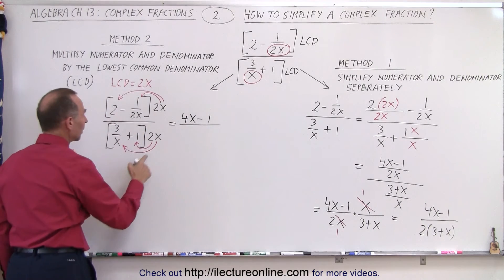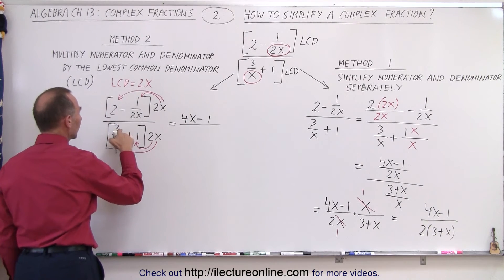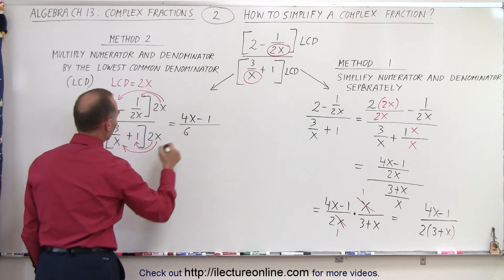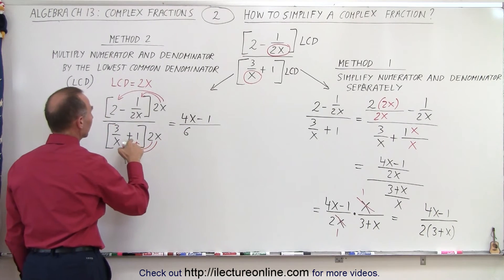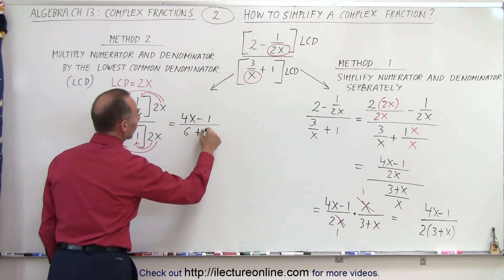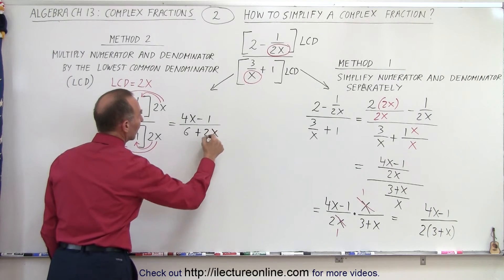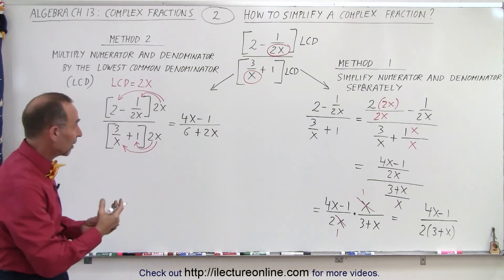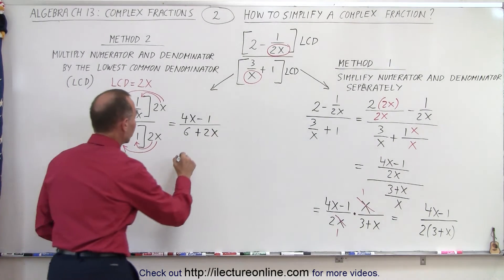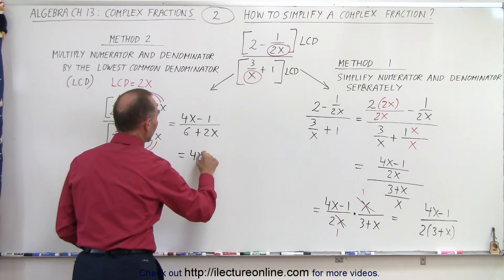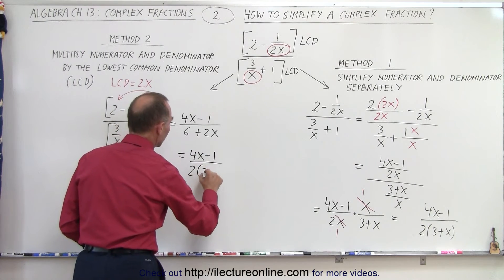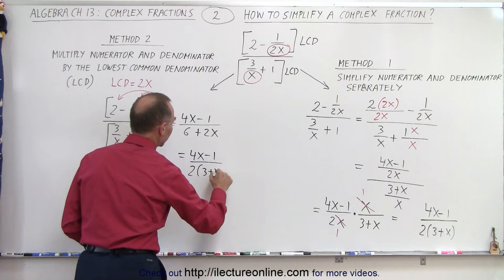In the denominator: 2x times 3 gives 6x divided by x, which simplifies to 6. And 1 times 2x gives plus 2x. Then in the denominator we can factor out a 2, so this can be written as (4x minus 1) divided by 2 times (3 plus x).